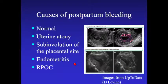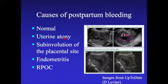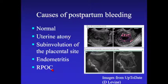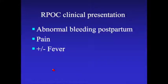Causes of postpartum bleeding: it really matters how long ago delivery was, because fluid and debris can be a normal postpartum finding. In the first 24 hours, uterine atony can cause bleeding. Subinvolution of the placental site is an important cause I'll discuss more. Endometritis usually presents with pain, discharge, and possibly fever. Retained products typically present with abnormal postpartum bleeding and pain, with or without fever. The problem is retained products can coexist with endometritis, which is why fever might be present.